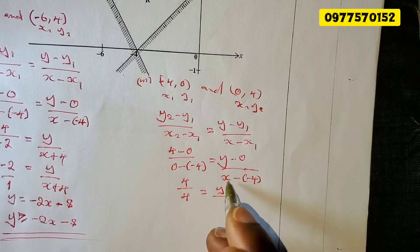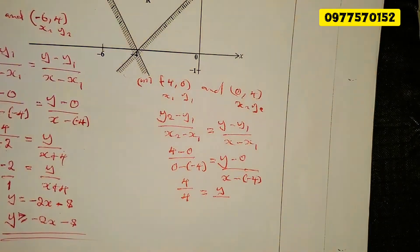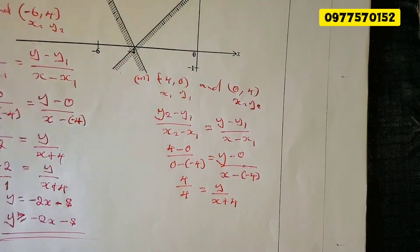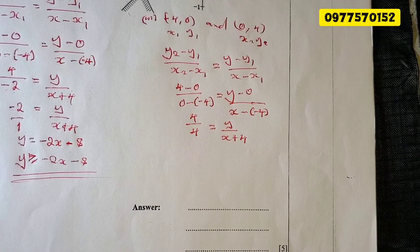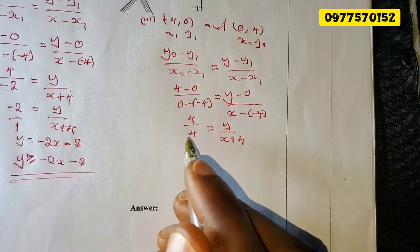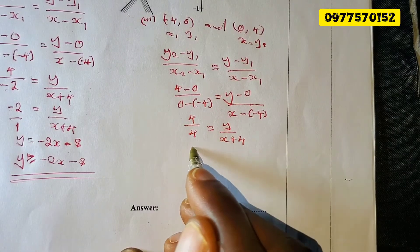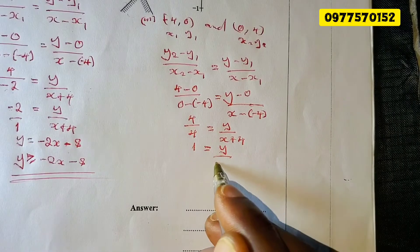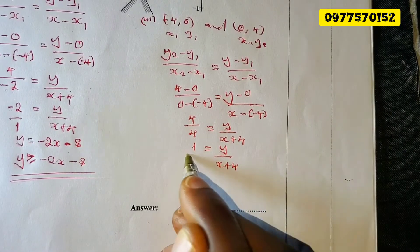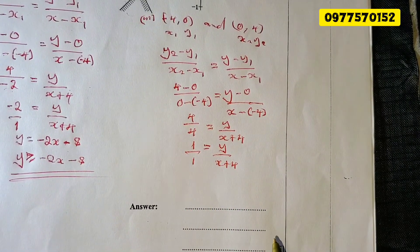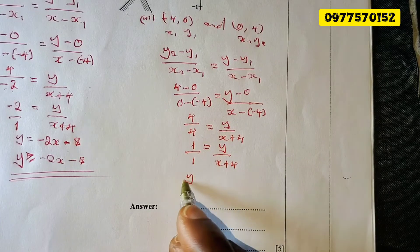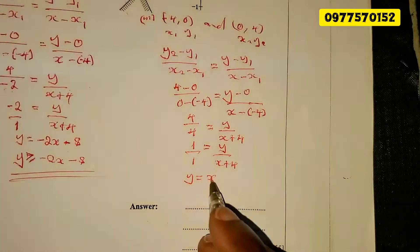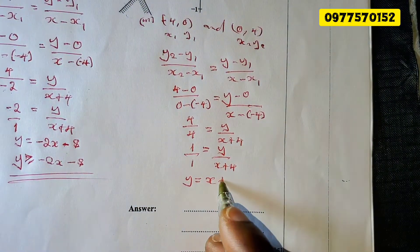y minus 0 is just y, and negative negative positive gives us x plus 4. We can simplify before cross-multiplying: 4 / 4 = 1, so we have y / (x + 4) = 1. Cross-multiplying: 1 times y is y, and 1 times (x + 4) gives x + 4. So y = x + 4.